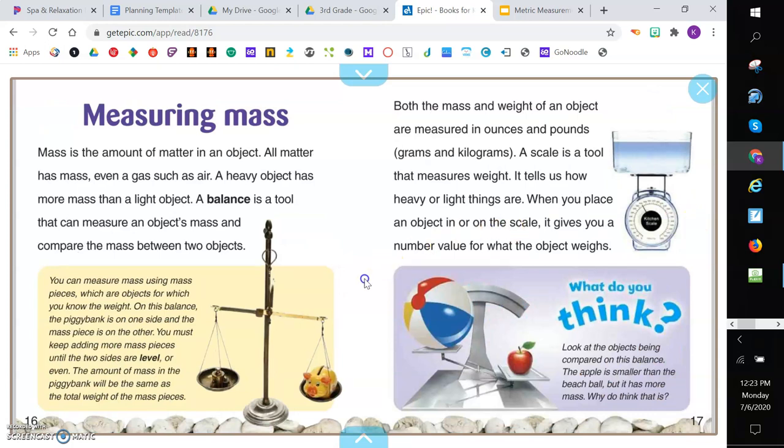Measuring mass. Mass is the amount of matter in an object. All matter has mass, even a gas, such as air. A heavy object has more mass than a light object. A balance is a tool that can measure an object's mass and compare the mass between two objects. Both the mass and weight of an object are measured in ounces and pounds. A scale is a tool that measures weight. It tells us how heavy or light things are. When you place an object in or on the scale, it gives you a number value for what the object weighs.